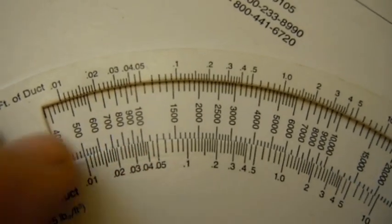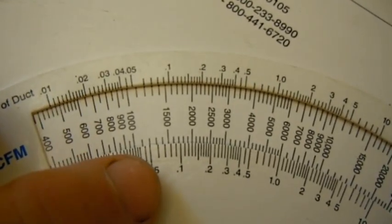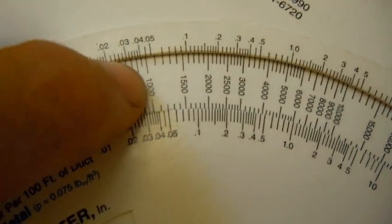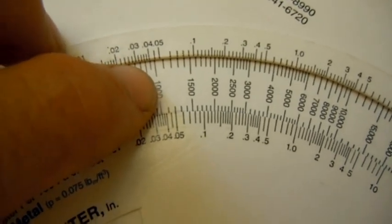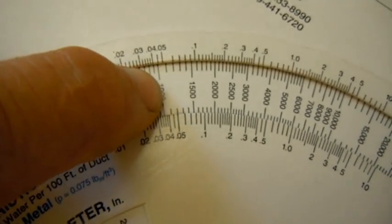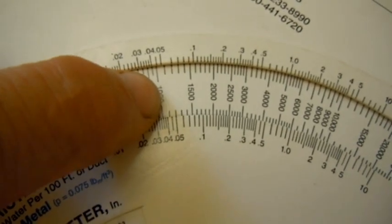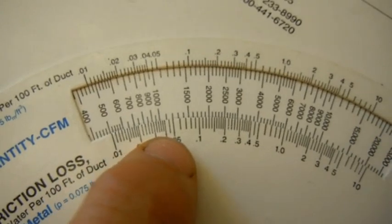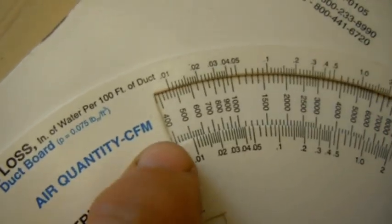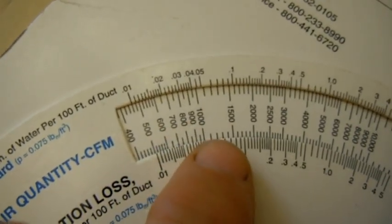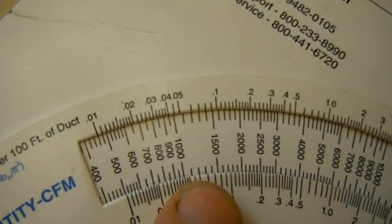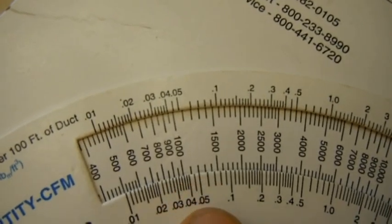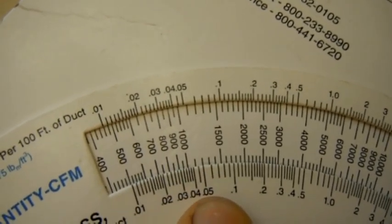And you have a three ton air conditioning system. Rule of thumb, every manufacturer is different, but rule of thumb is that there's 400 CFMs per ton of air. So let's say your CFMs are at 1,200, because three tons, that's three times 400 is 1,200 at .05.